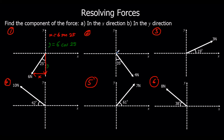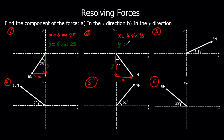Question 2: for the x-direction we've got the opposite, so opposite is sine, so x equals 4 sin 35. And y is the adjacent, so that's 4 cos 25.